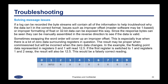If a log can be recorded, the byte streams will contain all of the information to help troubleshoot why the data isn't in the correct format. Issues such as improper offset — when the master software may be one-based instead of zero-based — or improper formatting of float or 32-bit data can be exposed this way, since the response bytes can be seen and manually assembled in reverse to verify if the data is valid.